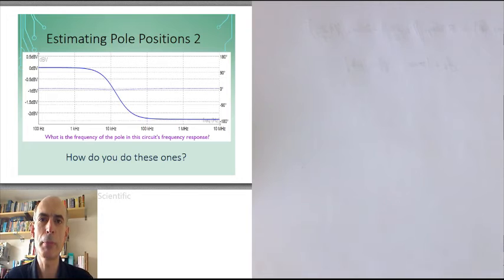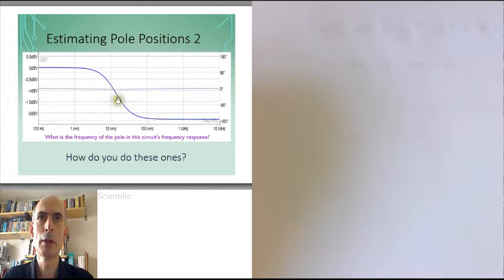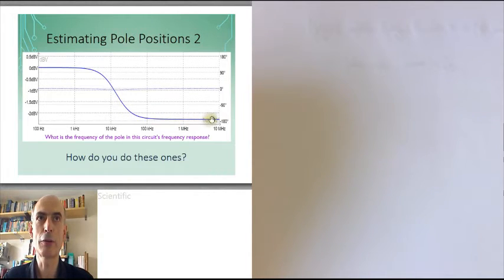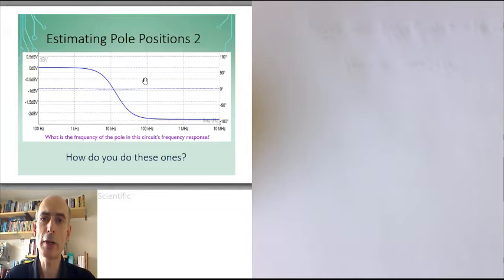But what can we do about amplitude responses like this? The amplitude response never drops by 3 dB. It starts off at 0 dB, and a pole occurs somewhere around here, which starts the amplitude response decreasing. But before it's had a chance to reach minus 3 dB, a zero starts to come into play and pulls it back up again, so that it eventually carries on level. So we can't look at where the asymptote straight lines meet, because they don't meet — and we can't look at where the amplitude has dropped by 3 dB, because it doesn't.